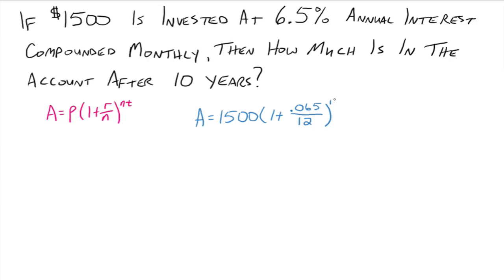All right, so then we've got 12 for the number of compoundings per year, and then times t. We're putting it in the account for 10 years. All right, so if you get everything plugged into the formula, and I would encourage you to write this down on your paper, so anybody that looks at it knows that you know where everything's supposed to go, then use your calculator and come up with the value, which is $2,868.28.